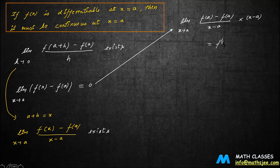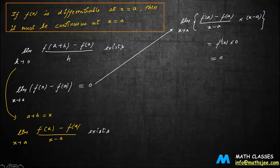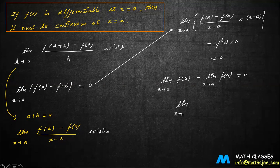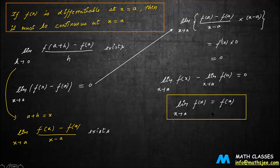This limit equals f'(a) times 0 (since x minus a tends to 0), which equals 0. This clearly implies limit x tends to a of [f(x) minus f(a)] equals 0, so limit x tends to a of f(x) equals f(a). This is precisely the condition for a function to be continuous: the limit should exist and equal the value of the function at that point.